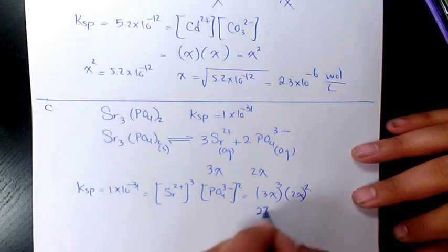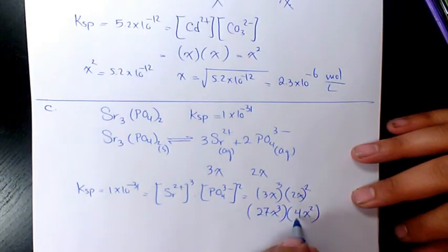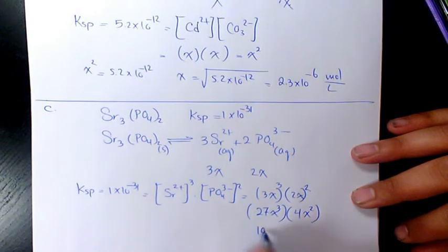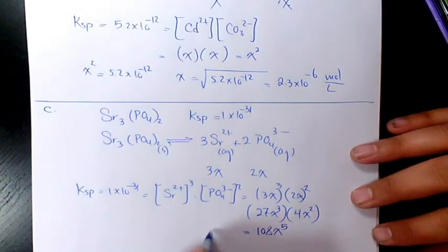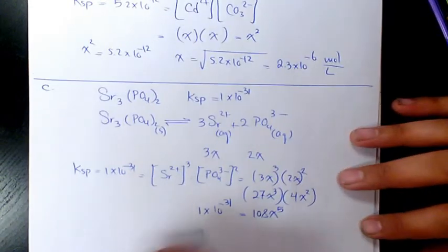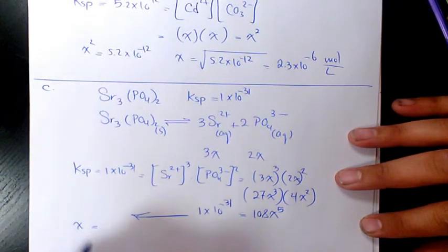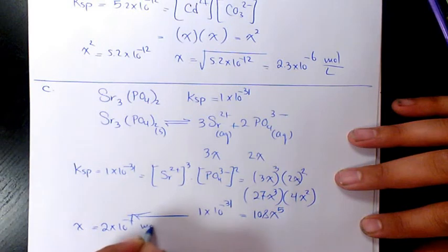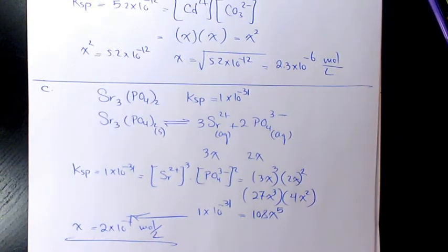That gives 27X³ times 4X², and 4 times 27 is 108, so we have 108X⁵ equals 1 times 10 to the power of negative 31. Solving for X, we get X equals 2 times 10 to the power of negative 7 moles per liter — that's the molar solubility of strontium phosphate and the final answer.